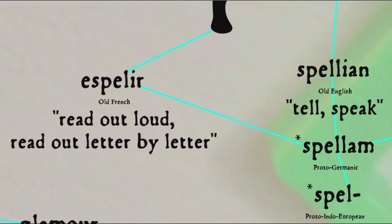Spell could also refer to a magical incantation, a sense we still have today, but the Germanic root that lies behind the word spell also made it into French via the Franks, and there it took on a new meaning. Anglo-Norman and Old French forms of the word, espeler and espalir, meant to read out loud, as well as read out letter by letter. After the Norman conquest of England, the French and British words merged, and it's from the French senses that we get the modern sense of spelling.